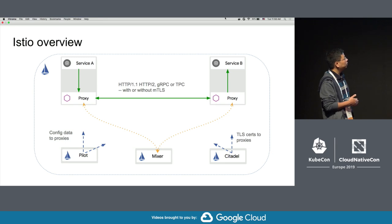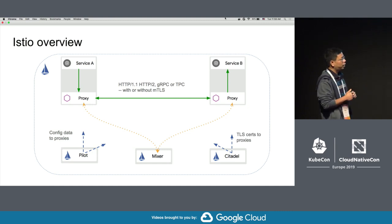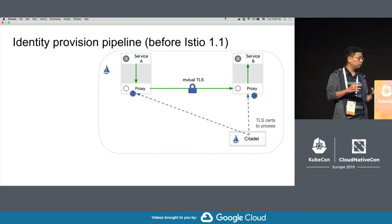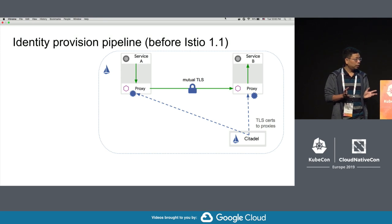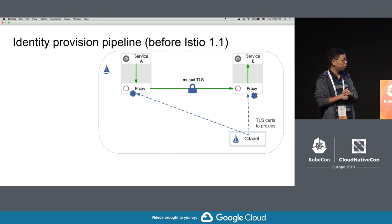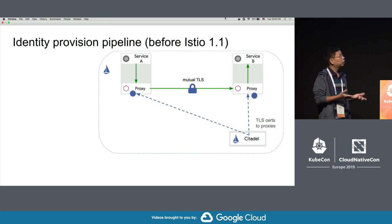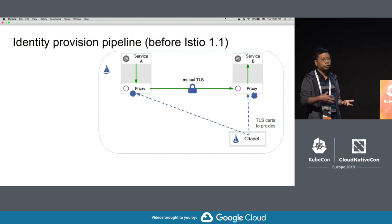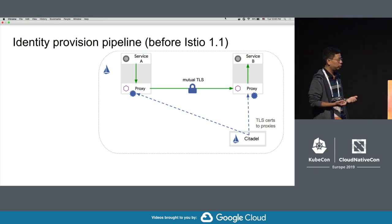Mixer receives the telemetry data from Envoy and sends it to the backend of your choice. Citadel is the component that manages keys and certificates that power mutual TLS. It manages the key and certificate for every service account — basically the identity model that Istio uses — and distributes that to the services that need it. Pilot can then tell Envoy which key and cert to use to connect to other services, and what subject alternate name to expect from the server to enforce mutual TLS and secure naming.